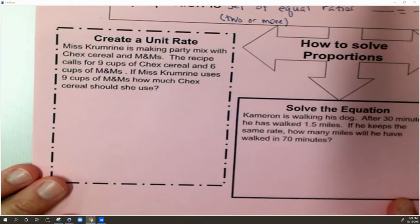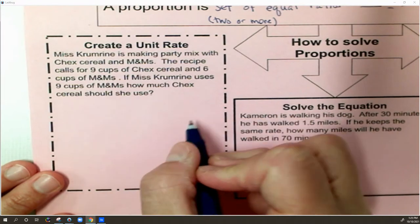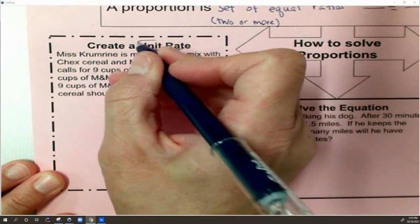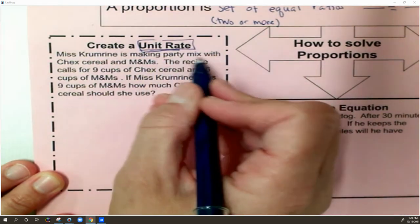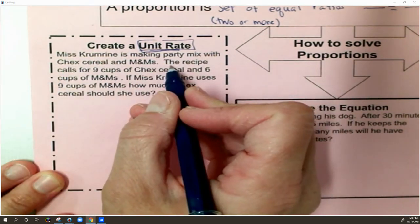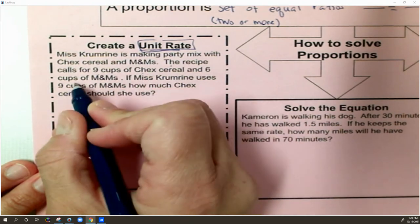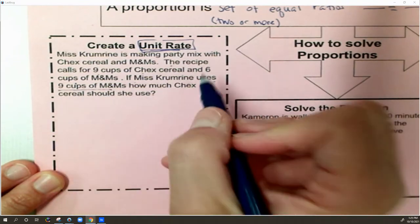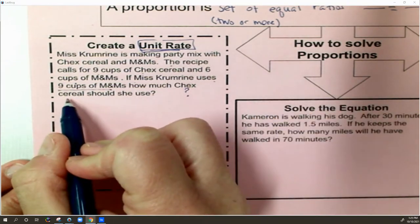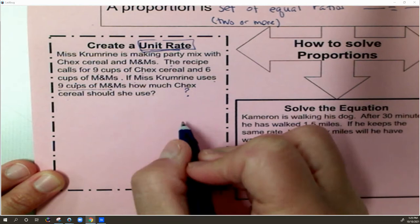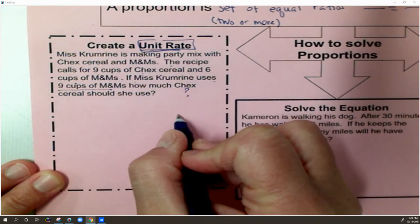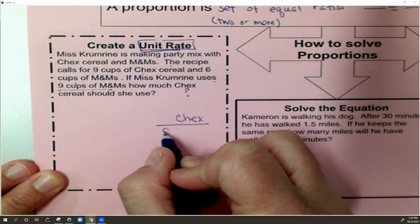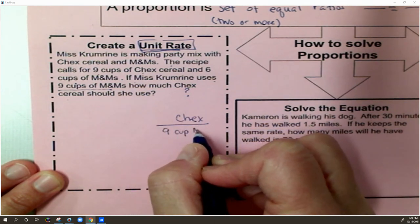The other method is creating a unit rate. And to create a unit rate, that means that I don't already have a unit rate. So let's look at this method here. Ms. Crumrine is making party mix with Chex cereal and M&Ms. The recipe calls for 9 cups of Chex cereal and 6 cups of M&Ms. If Ms. Crumrine uses 9 cups of M&Ms, how much Chex cereal should she use? So Chex cereal is my question mark. So that's what I'm going to put in the top of my rate. And I want to know how much Chex to use with 9 cups of M&Ms. So that goes in the bottom.